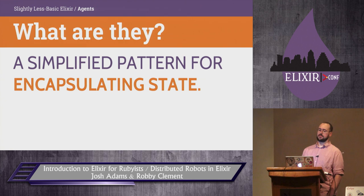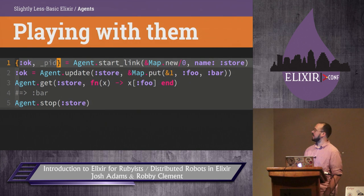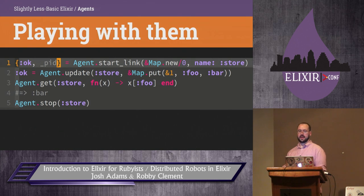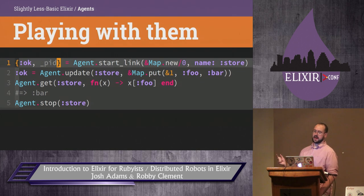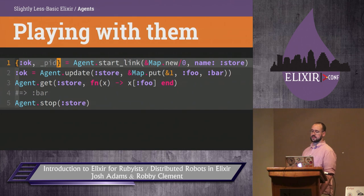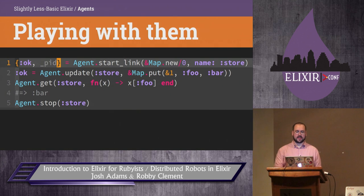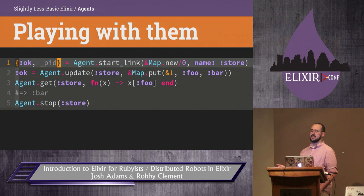Agents are a simplified pattern for encapsulating state. You can use them anytime you want to wrap state in a process and you don't intend to do anything more interesting with that process. Here we're starting a new agent up and handing it a function that returns its initial state, and giving it a name. To update an agent, you pass it a function that takes the agent state as an argument and returns a new state. To get data out of an agent, you pass it a function that receives the state as its argument and returns the data you're interested in.